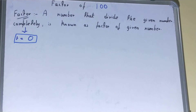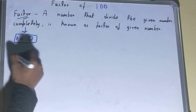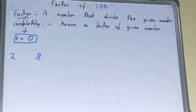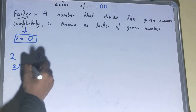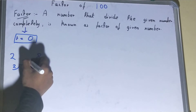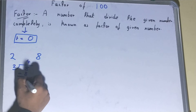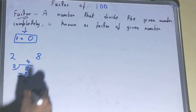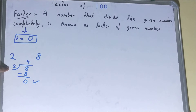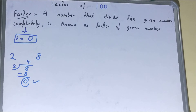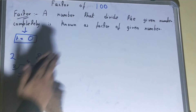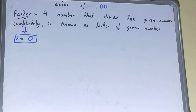Let's take an example: 2 and 8. How can you check if 2 is a factor of 8? By performing the division. When you perform the division you get the remainder as zero — if you get remainder zero, you can call that number a factor of the given number. If you get a non-zero remainder, then that number is not a factor.